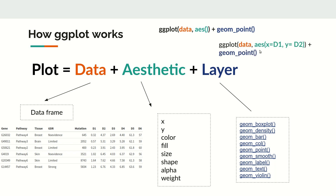For a simple scatter plot, the actual command is: ggplot(data, aes(x = d1, y = d2)) + geom_point(). Here, our data is stored in the data variable, x is mapped to d1 and y is mapped to d2. This will draw the scatter plot between d1 and d2. These three components — data, aesthetic, and layer — form the plot.